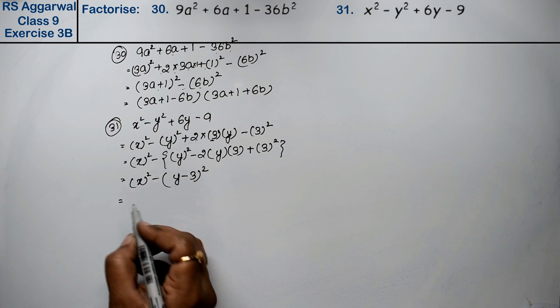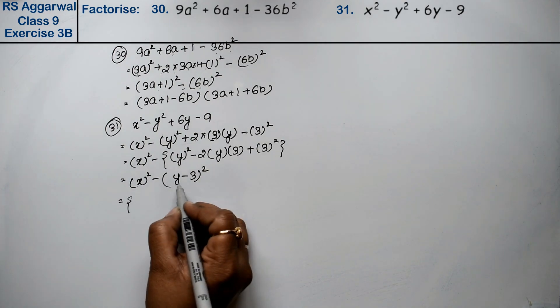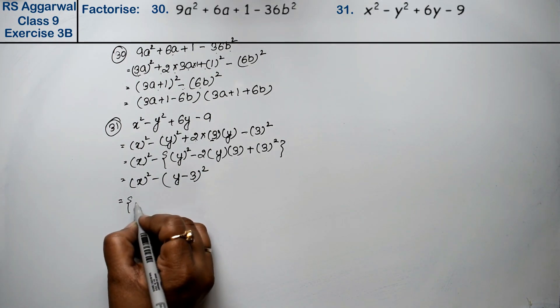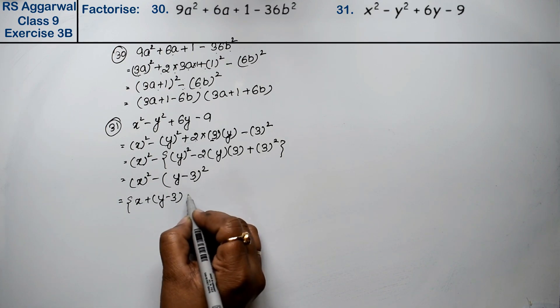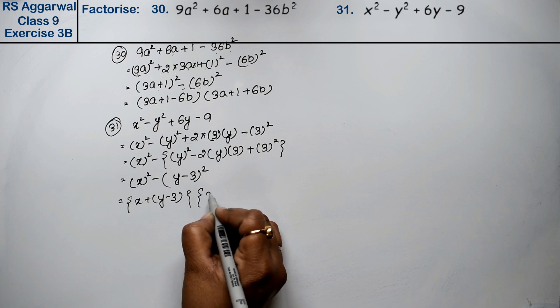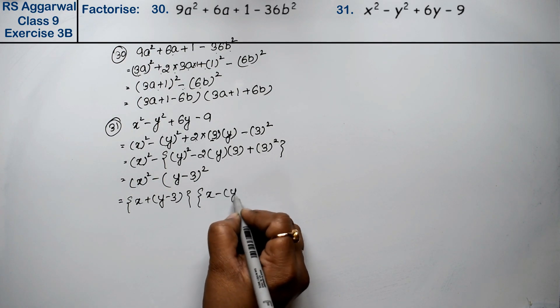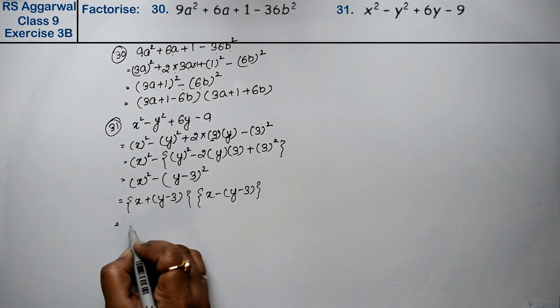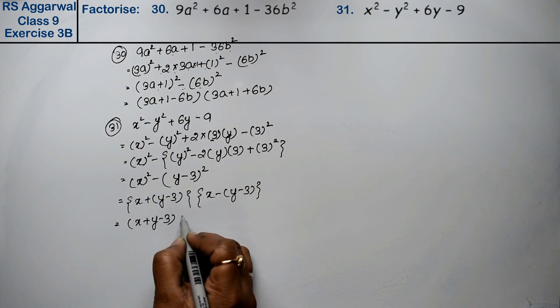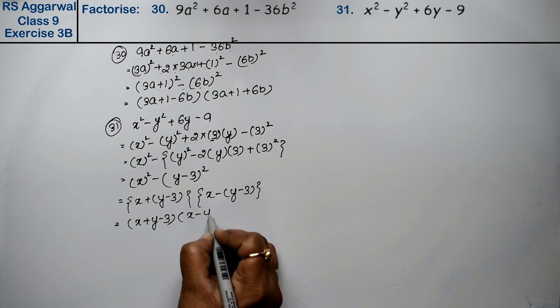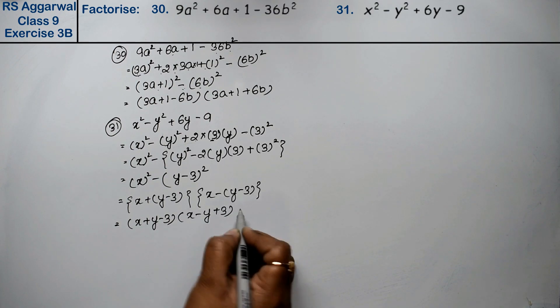Middle bracket, because b has 2 values. a + b and a - b. What do we get? x + y - 3 and x - y + 3 is the answer.